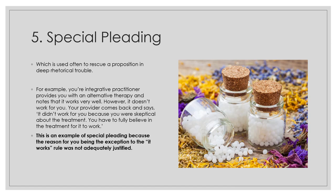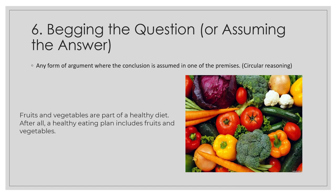You also have to be aware of begging the question, or assuming the answer — this leads to circular reasoning. If I say fruits and vegetables are part of a healthy diet because, after all, healthy eating plans include fruits and vegetables, that doesn't really tell me why they're important. This is an example of circular reasoning — you've got to get to the reasoning why those fruits and vegetables are having a positive impact on health.